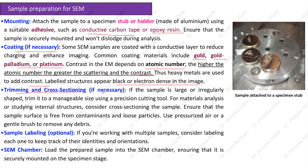Trimming and cross-sectioning, if necessary: if the sample is large or irregularly shaped, trim it to a manageable size using a precision cutting tool. For material analysis or studying internal structures, consider cross-sectioning the sample, ensuring the surface is free from contaminants and loose particles — use pressurized air or a gentle brush to remove debris. Sample labeling is optional: if working with multiple samples, consider labeling each to track identities and orientations. Finally, load the prepared sample into the SEM chamber, ensuring it is securely mounted on the specimen stage.